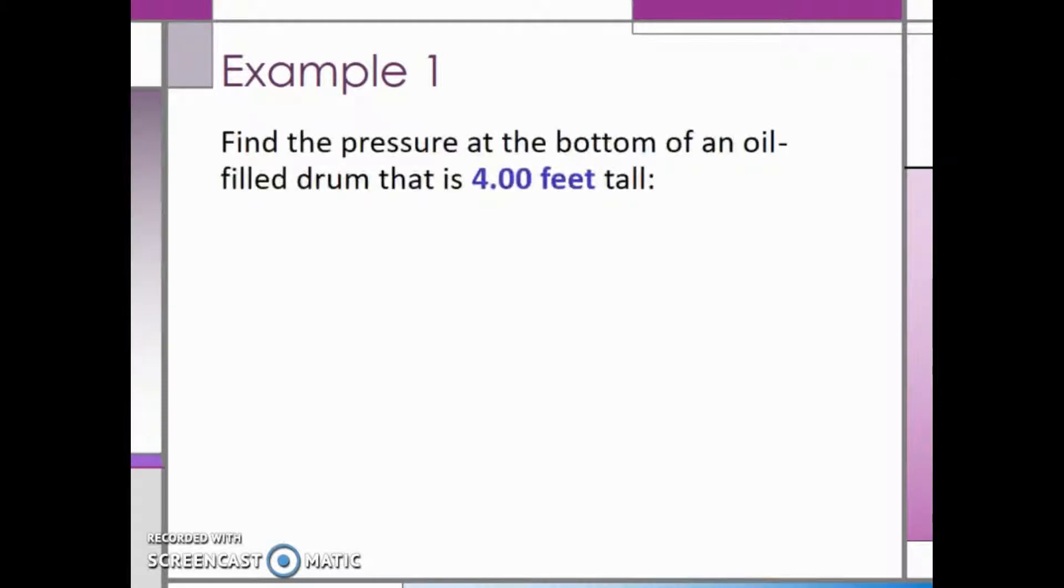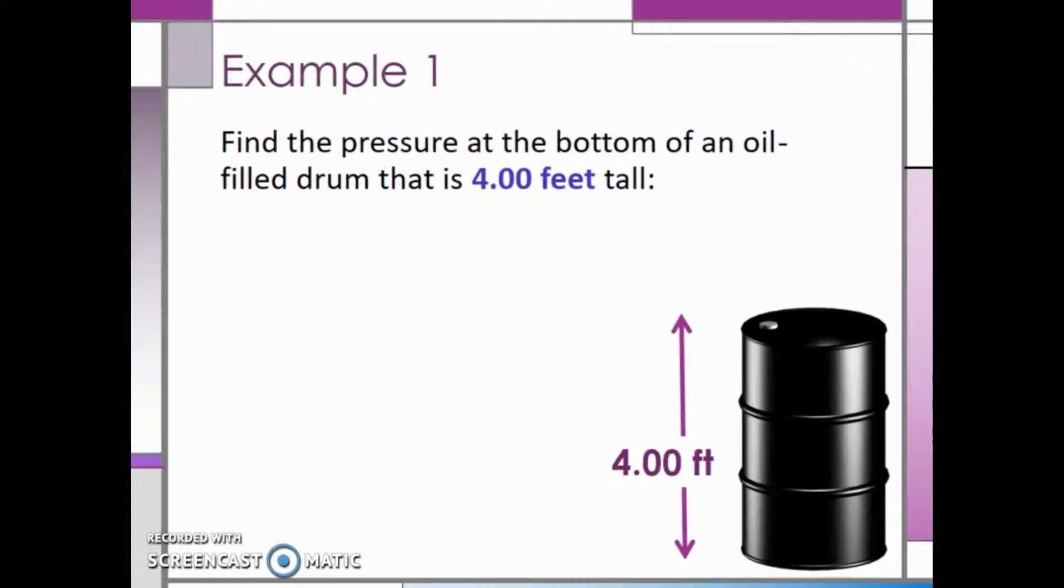In this first example, we need to find the pressure at the bottom of an oil-filled drum that is 4 feet tall. Remember, pressure is equal to the depth multiplied by the weight density. In this problem, the depth of the fluid will be the entire depth of the barrel, since we want to find the pressure at the bottom of the barrel.